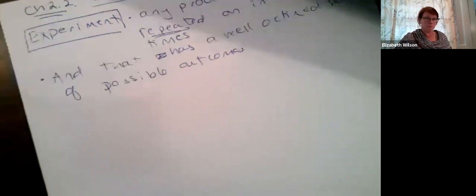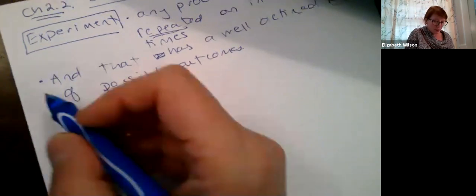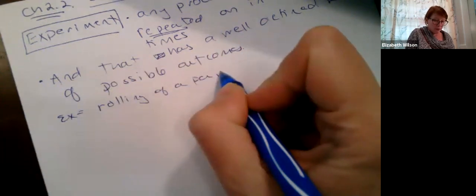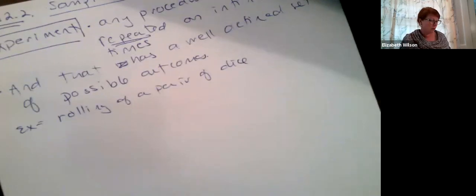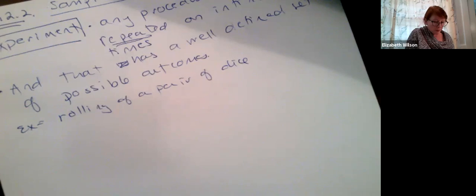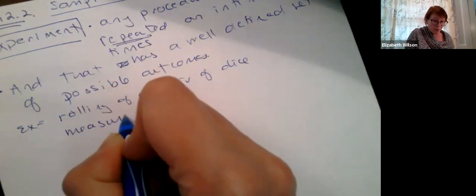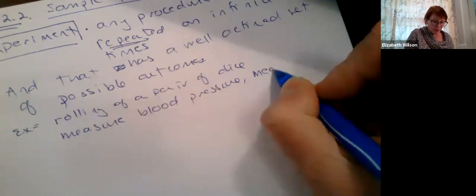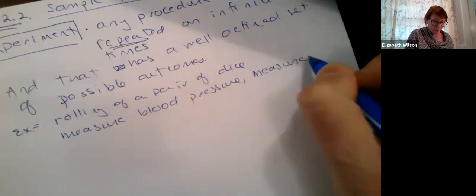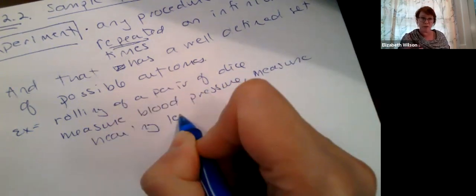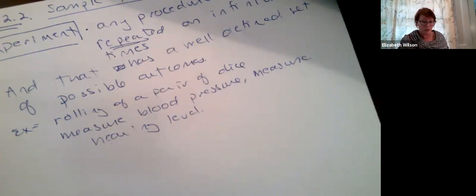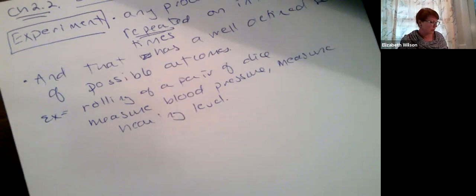Some examples of experiments: rolling a pair of dice, measuring people's blood pressure, or measuring hearing level and testing for hearing loss. Something that is not an experiment would be going to a psychic and having them draw a picture of what you're thinking — that's not repeatable and doesn't have a well-defined set of outcomes.